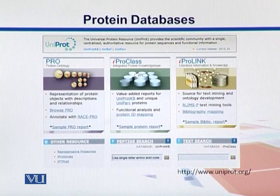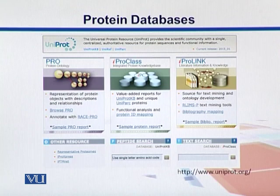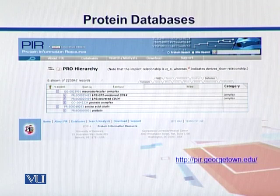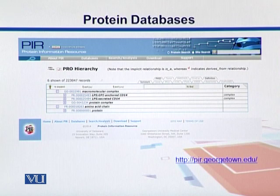Here is the page of UniProt. As you can see, we have three main sections. We can have protein ontologies, labeled as PRO. Then we have the PRO class where we can have the sequences, and PRO link tells us about the literature. Ontologies are where we classify proteins on the basis of their functions, and different functions have their own hierarchy — there is a major function with a trend moving towards more specific functions.